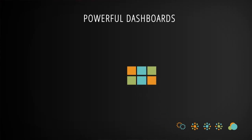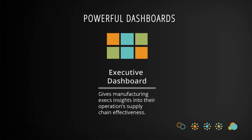We start with the executive dashboard, which is for the top C leaders of the organization — your chief engineer, your chief purchasing officer, or even the CEO — that summarizes the data and gives it to that top person in a very easy-to-use fashion, so they understand quickly if there are issues.